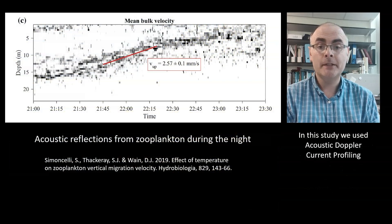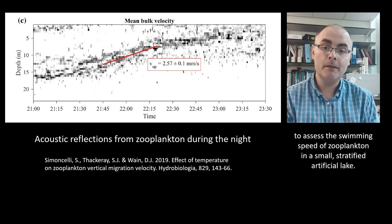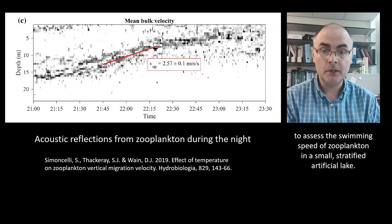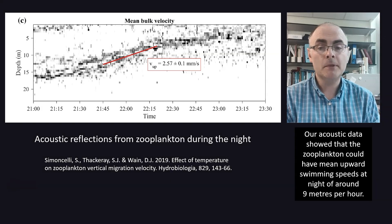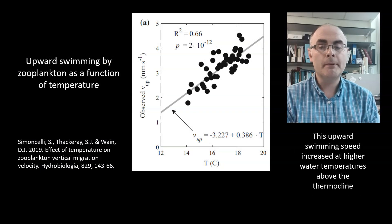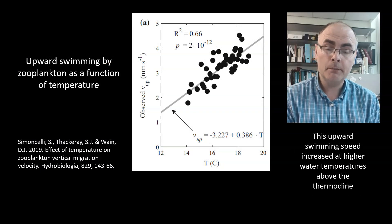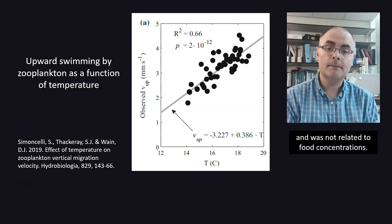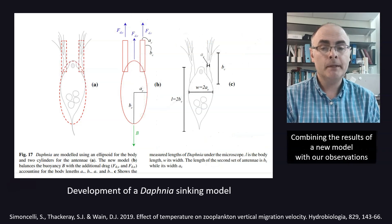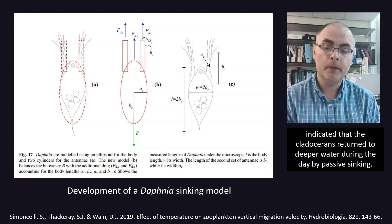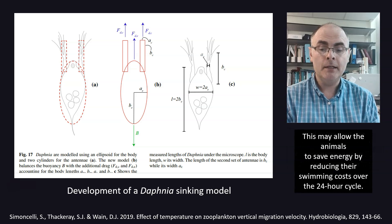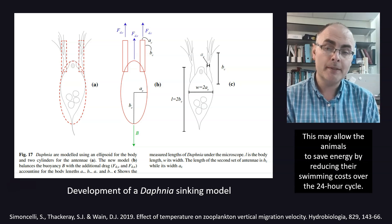In this study we used acoustic Doppler current profiling to assess the swimming speed of zooplankton in a small, stratified artificial lake. Our acoustic data showed that the zooplankton could have mean upward swimming speeds at night of around 9 metres per hour. This upward swimming speed increased at higher water temperatures above the thermocline and was not related to food concentrations. Combining the results of a new model with our observations indicated that the cladocerans returned to deeper waters during the day by passive sinking. This may allow the animals to save energy by reducing their swimming costs over the 24-hour cycle.